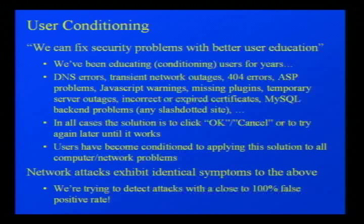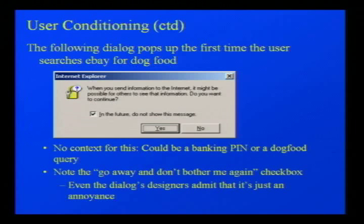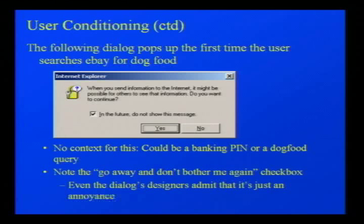The problem is that if you get a network attack, you get symptoms that are exactly identical to the standard background noise that users expect. The browser is trying to detect these attacks with a 100% false positive rate. Here's an example: you fire up Windows, go to eBay, search for dog food, and you get a warning dialogue that tells you absolutely nothing. It says you're going to send information to the internet — obviously you are, you're surfing the net. Even the programmers admit the dialogue is a waste of time; you can see the checkbox at the bottom that says 'don't bother me again.'